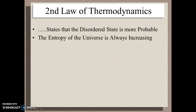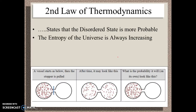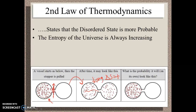Imagine a gas in a vessel — right now it's all trapped on one side. If I were to open up the stopper, the gas would spread out. Going from that state to the spread-out state, the entropy is increasing because it's getting more disorganized — so delta S is positive. That's the natural tendency according to the second law. What are the odds I would come back two hours later and find it all back on one side? That's highly improbable — statistically almost impossible — because they want to be disorganized.